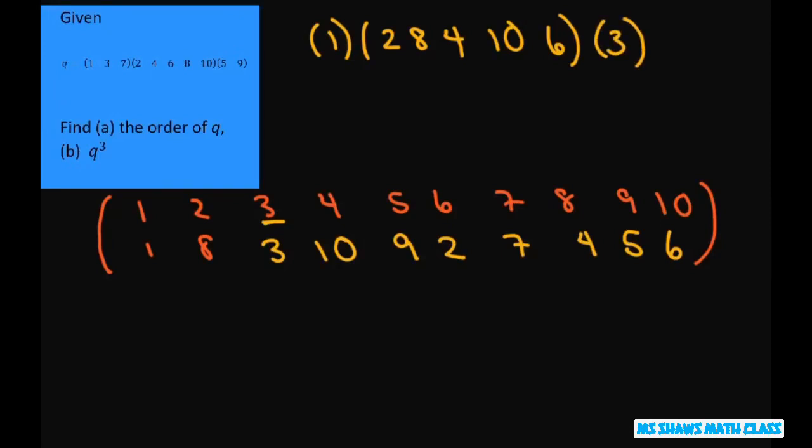And let's look at what do we have left. We have 7 goes to 7, and then let's look at 5. 5 goes to 9, and 9 goes back to 5.